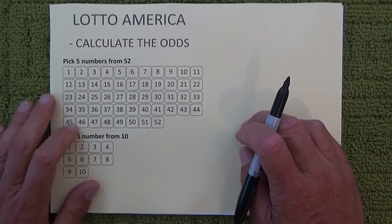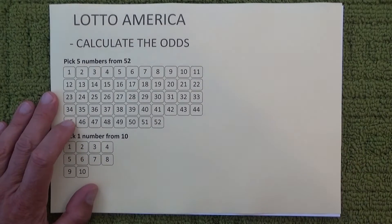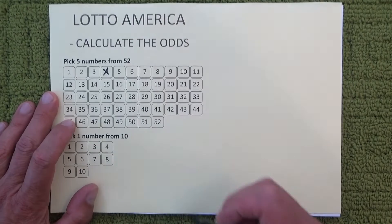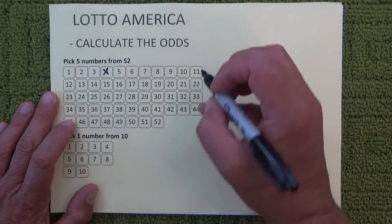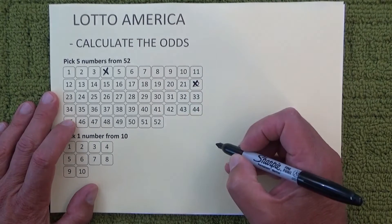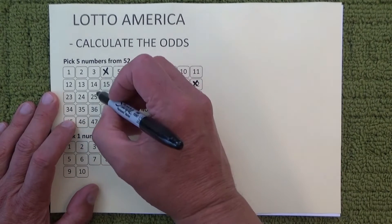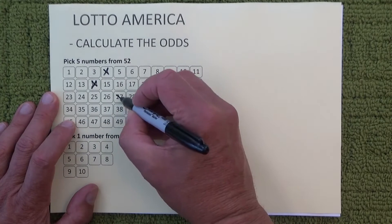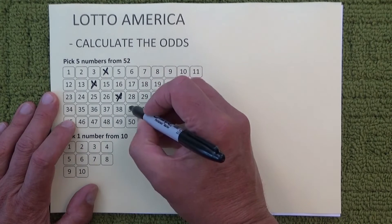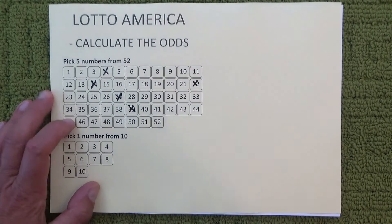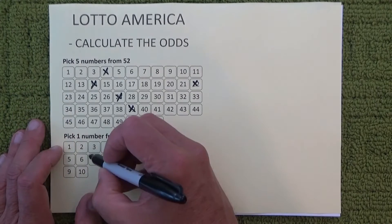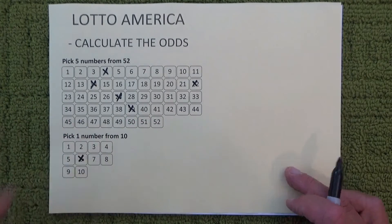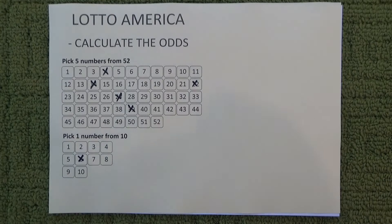First of all, I'm just going to randomly pick five numbers in the top section. So I've got 4, 22, 14, 27, and 39, and I'll have lucky number 6 in the star ball section.